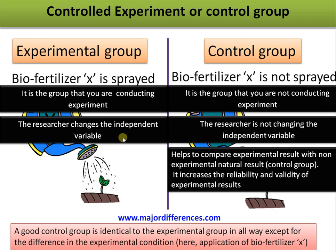If there is more growth in the experimental group than in the control group, then we can definitely say that the biofertilizer is effective. Otherwise, we need to revise the formulation. The control group also increases the reliability and validity of experimental results. So if there is a possibility of keeping a control group, it is a must in an experiment.